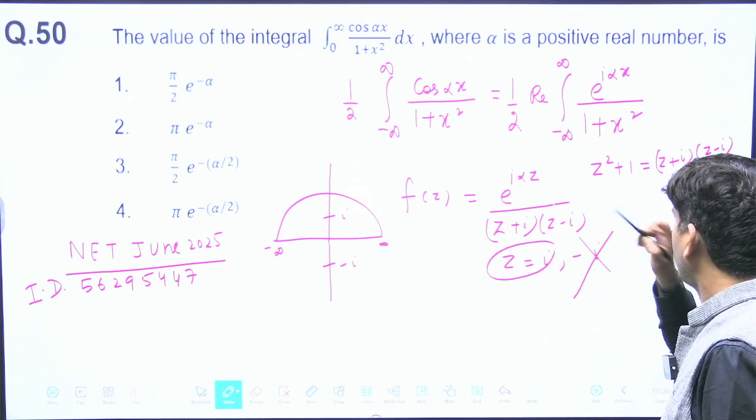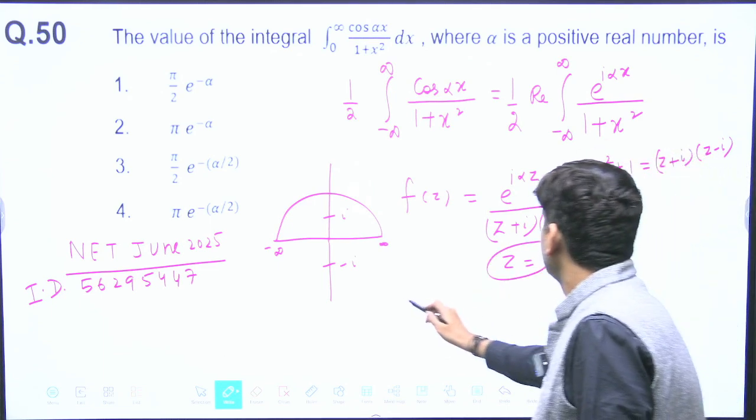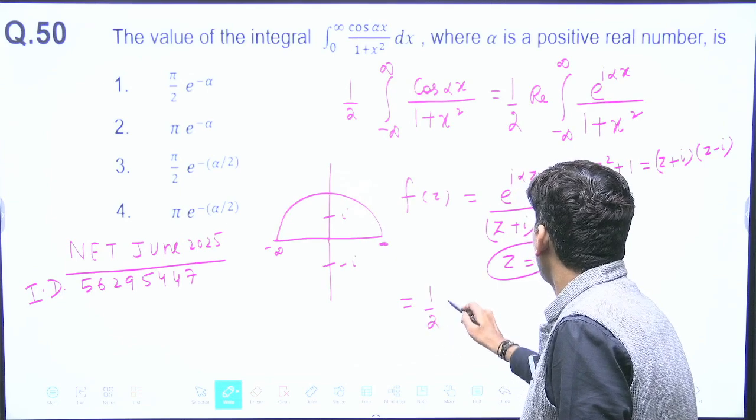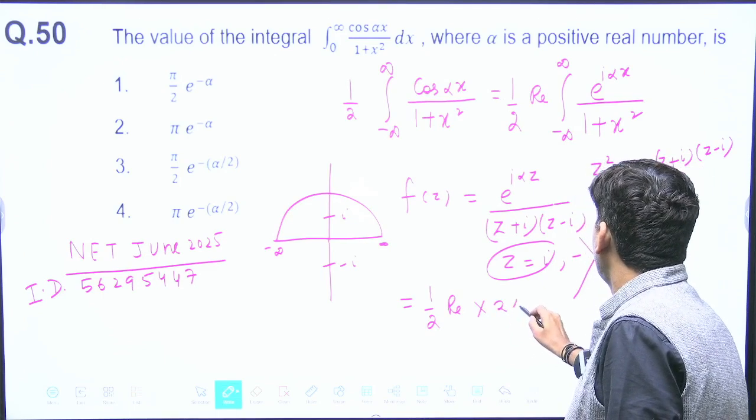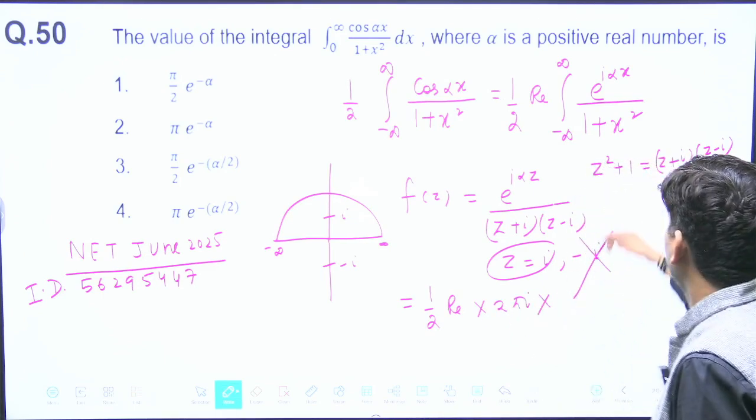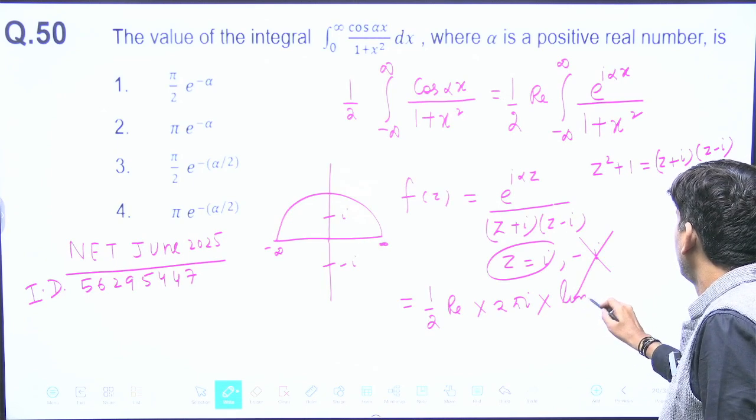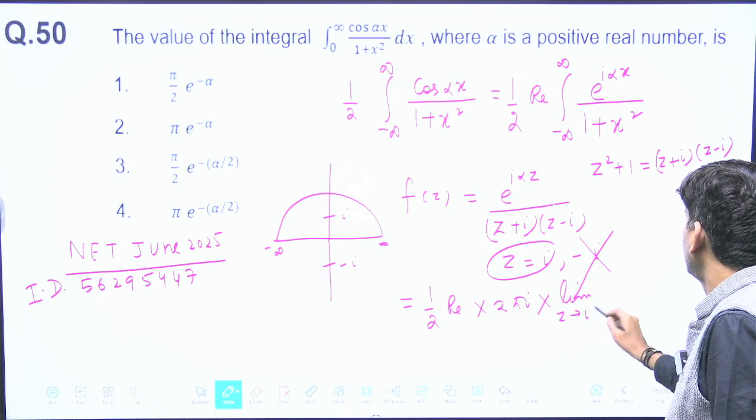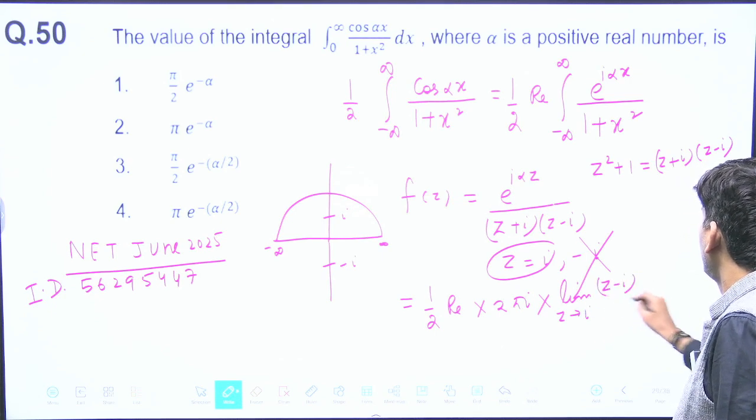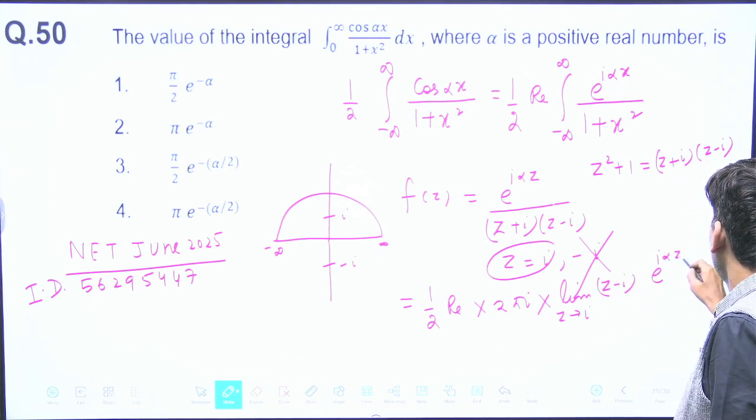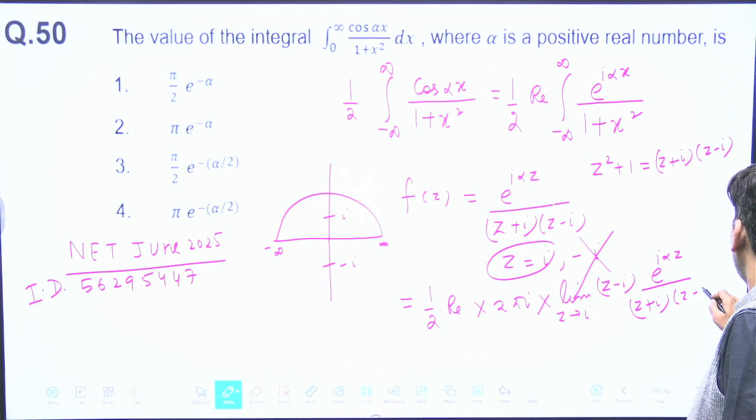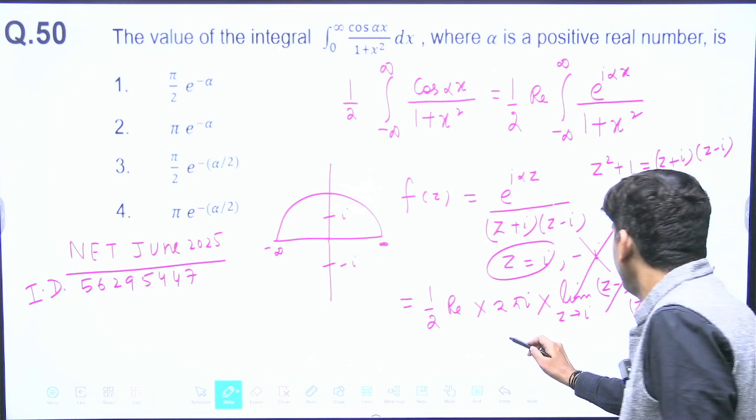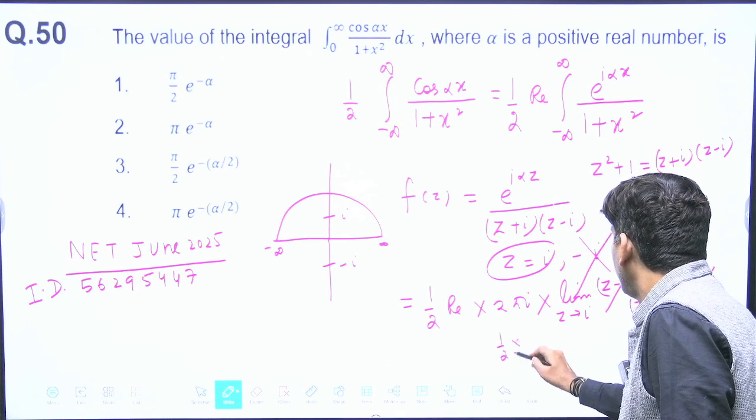What will be my answer? It will become half of real of 2πi into residue. The residue will become limit z tending towards i of (z - i) times e^(i*alpha*z) / [(z + i)(z - i)]. The (z - i) will cancel.